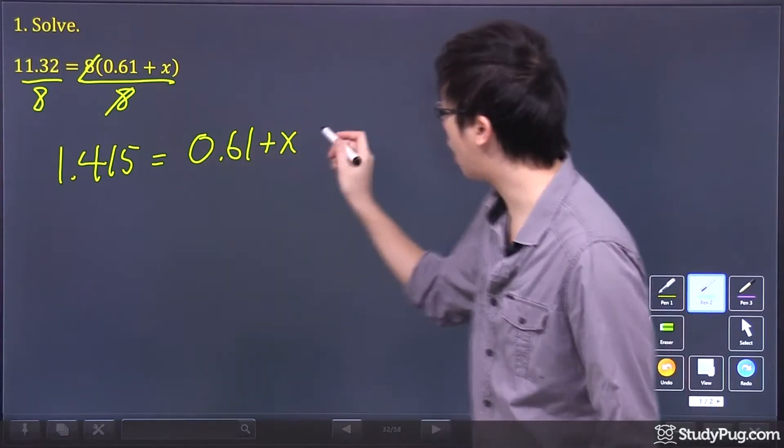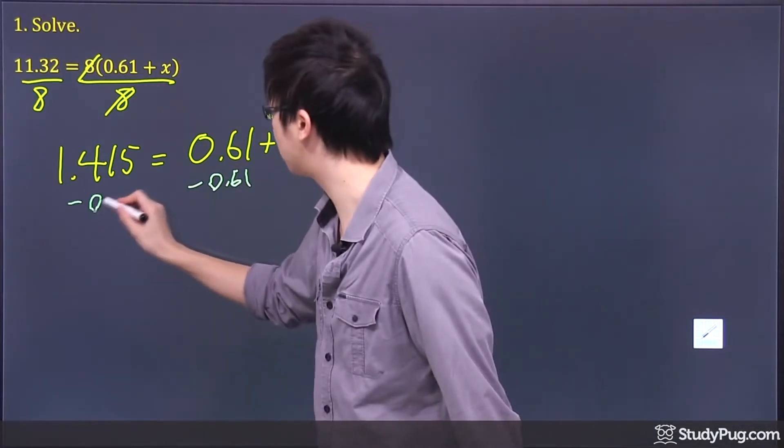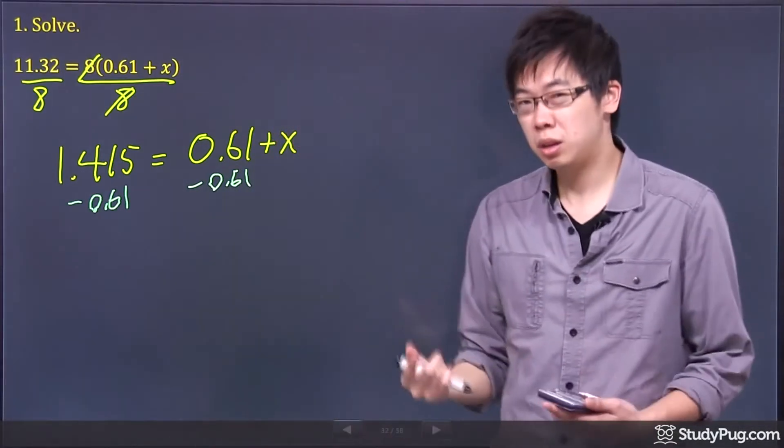To remove this, I would subtract 0.61 from both sides. That would probably be easier to see.